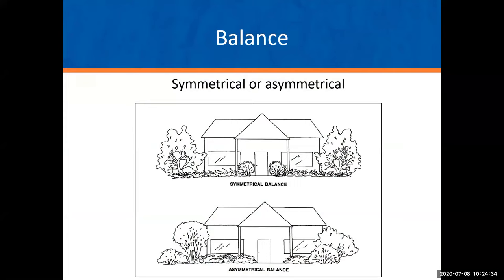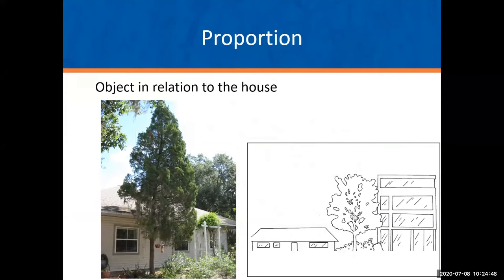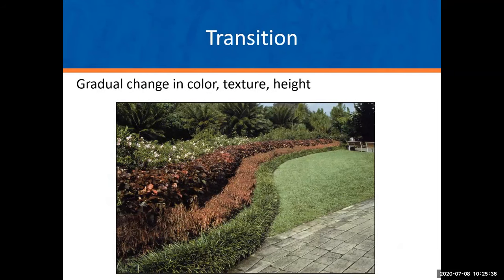Looking at balance — symmetrical or asymmetrical — it's just something to consider when creating a design. It is important to look at the proportions of the plant and its mature size when selecting plants for your yard. You can find that in our plant guide, because you want to make sure you've selected a plant that works well with the size of your property and house. This photo shows a poor example — a really large tree right up against the house makes your house look very small.